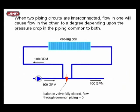If the balancing valve is totally closed, obviously the flow rate through the common pipe has to be zero. Now you go to the secondary pipe — we're defining it as we go. The secondary loop through the cooling coil, that flow rate has to be 100 GPM. So the primary flow rate is 100 GPM because the bypass common pipe has a closed balancing valve in it, and we've got 100 GPM going through the cooling coil.